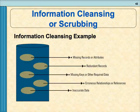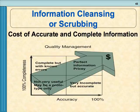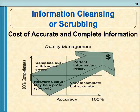During data cleansing, you deal with: missing records or attributes, redundant records, missing keys or other required data, erroneous relationships or references (since different relational databases may store relationships differently), and inaccuracies. These examples illustrate the cost of not having accurate and complete information — ideally you want 100% completeness with every field filled out and 100% accuracy.